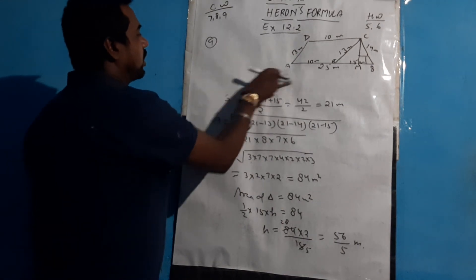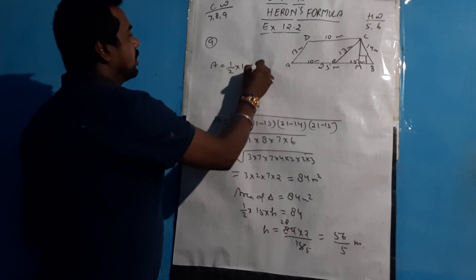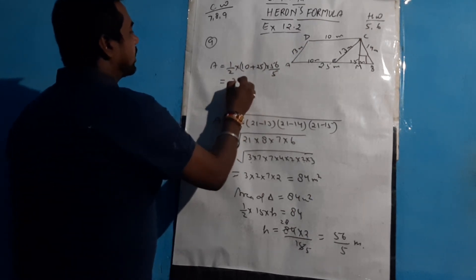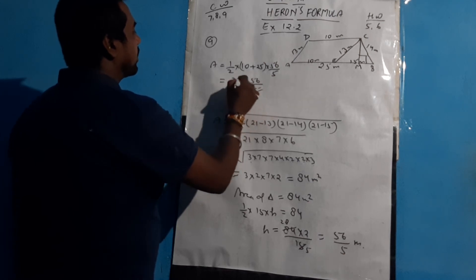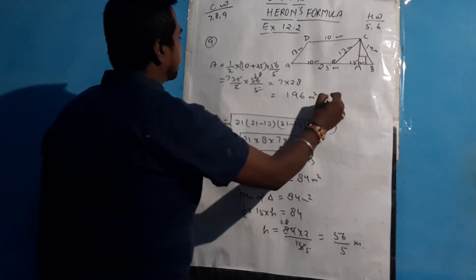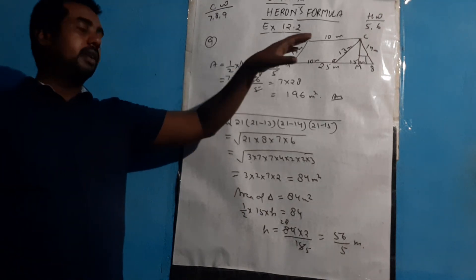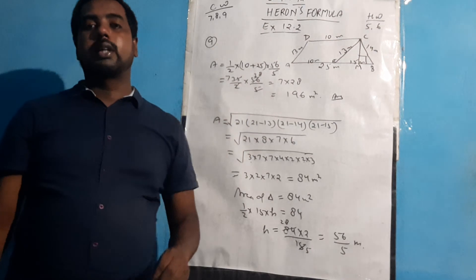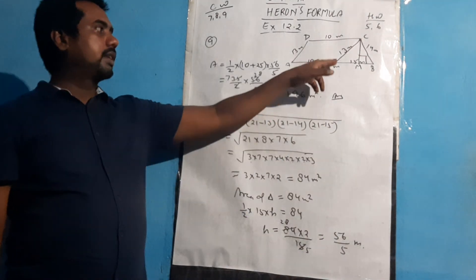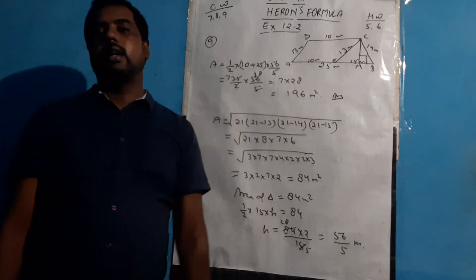Now applying the trapezium area formula: area = half × (sum of parallel sides) × height = half × (10 + 25) × (56/5) = half × 35 × (56/5). Simplifying: 35/2 × 56/5 = 7 × 28 = 196 m². So the area of the trapezium is 196 m².